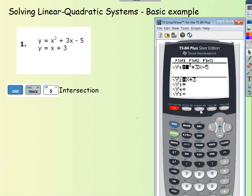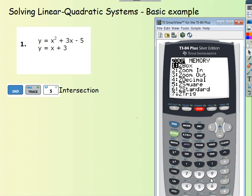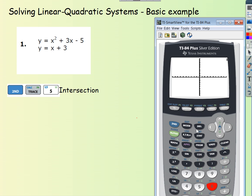Remember that whenever we graph something we always hit zoom and choose number 6, zoom standard. At this point we can see here, this is my basic example. We see that standard screen that will show us pretty much everything we need.